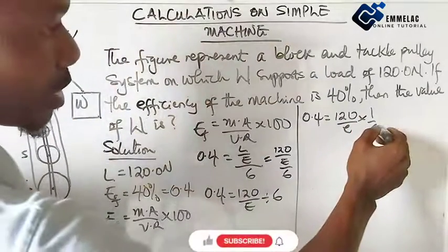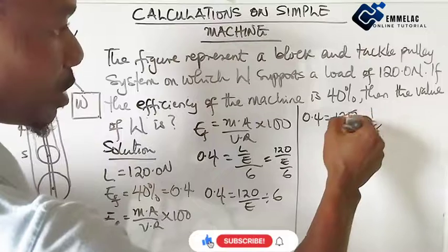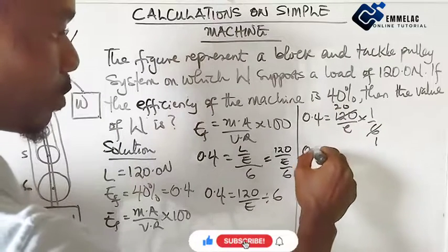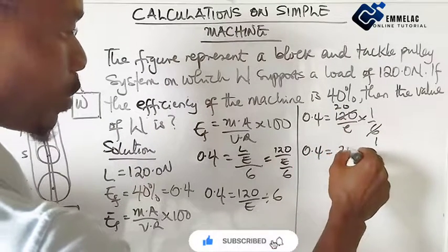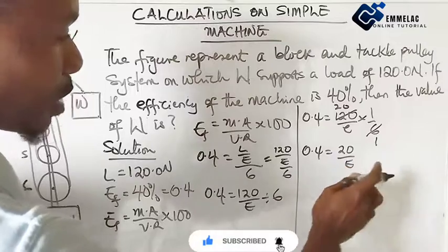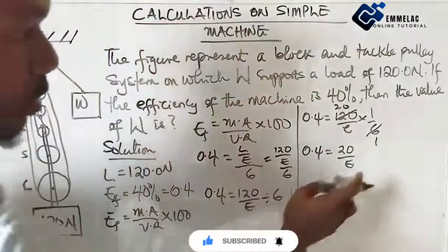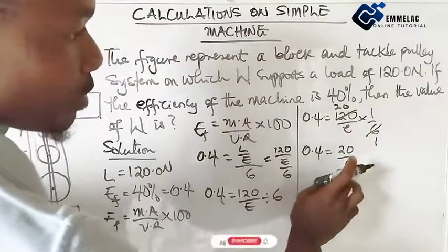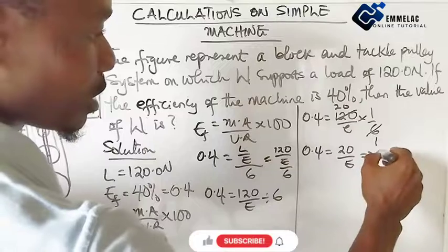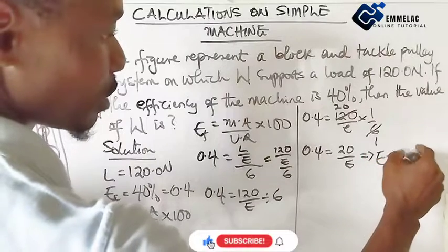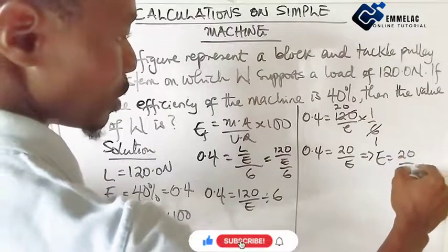Here we have 0.4 equals 120 over the effort. Let us cross-multiply or make E the subject of the relation.